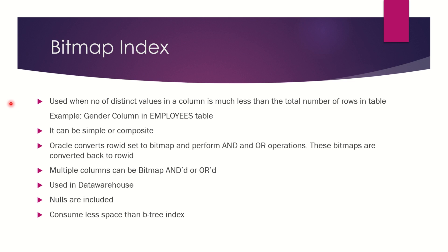Let us talk about the second type of index: the bitmap index. We know that when the number of distinct values in a column is more, we can use the B-tree index. But what if the number of distinct values in a column is less? In such cases, a B-tree index will take a lot of time, and the solution is to use the bitmap index.